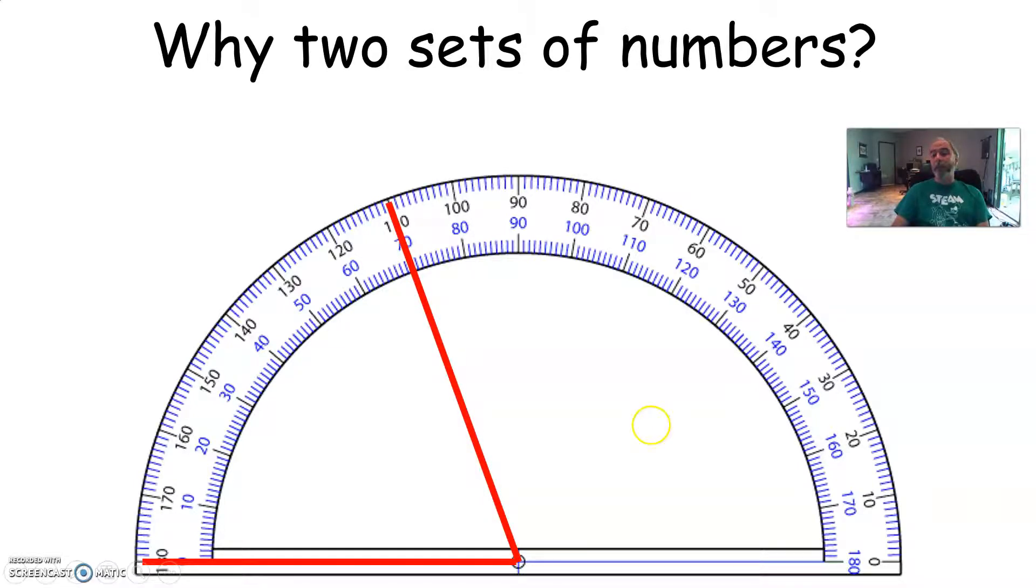Why two sets of numbers? Well, because you have two types of angles. You have an angle starting from this side. So I would use the zero here, the blue numbers, to measure this angle. But look, now I have an angle from the other side of the protractor. Now I will use the top band of numbers because this bottom of the angle is pointing to zero. And over here, the red angle, that one's pointing to zero on the other side of the protractor. Make sense?